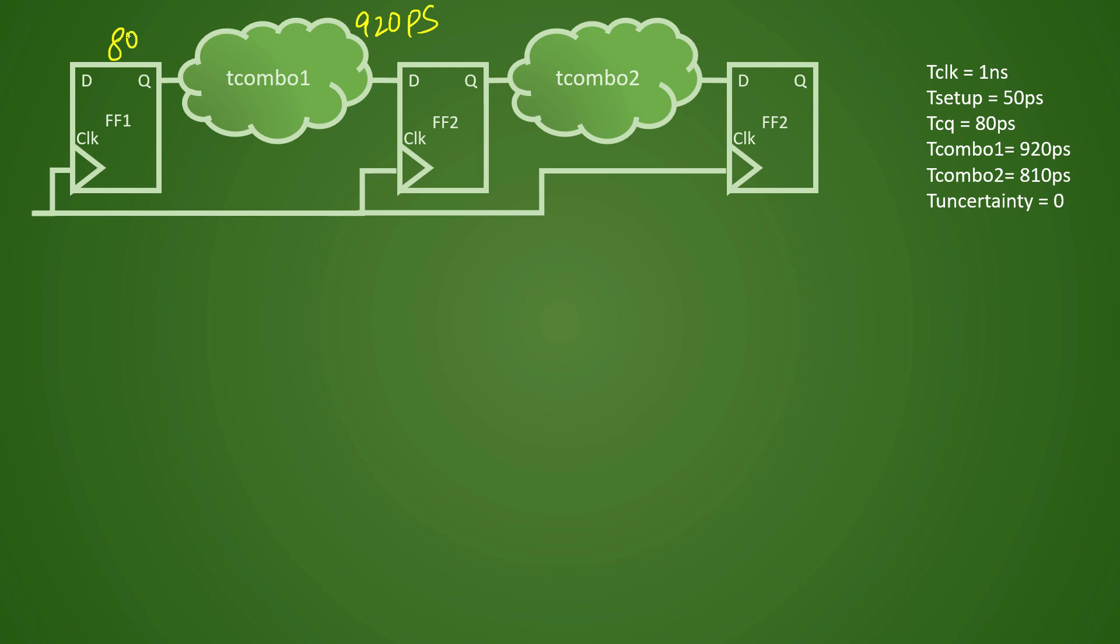Your TCQ was 80 picoseconds for this flop and this is your launch flop for T combo 1. So in this case, if we try to calculate your arrival time, arrival time will be your clock latency. But here we have taken the uncertainty as zero for ease of calculation. It will come directly to your clock pin. So from clock pin to TCQ, it will be 80 picoseconds plus 920 picoseconds, and by now you would have already calculated that it is 1000 picoseconds.